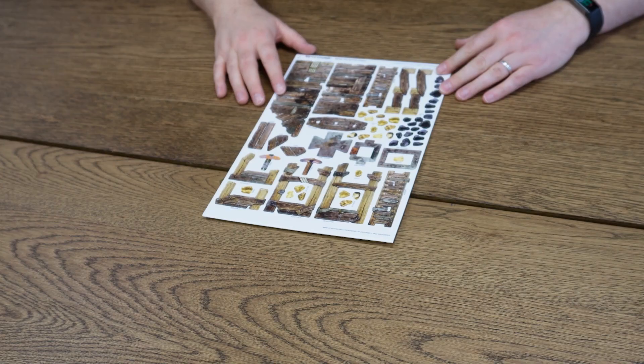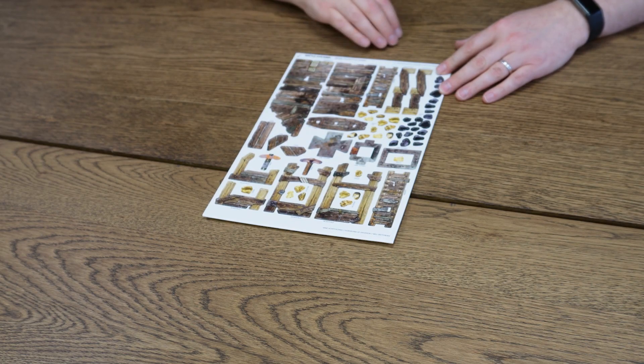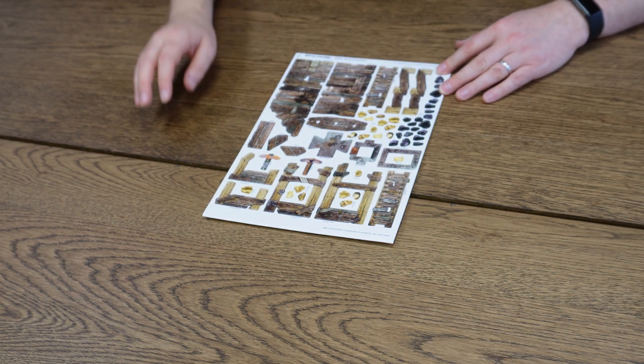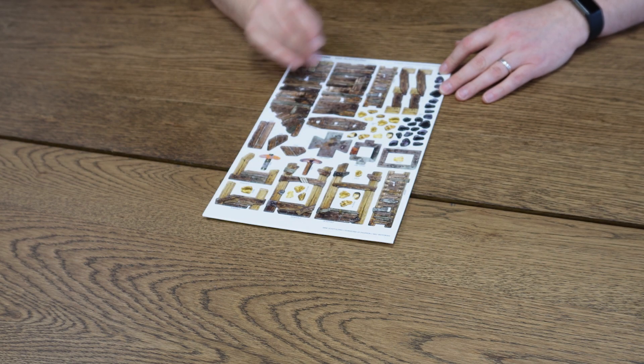Next we have the scaffolding sheet. On here we've got some scaffolding, an ore tipper, lots of ore, a ladder. And we'll just start popping those all out now and have a look at how they get together.